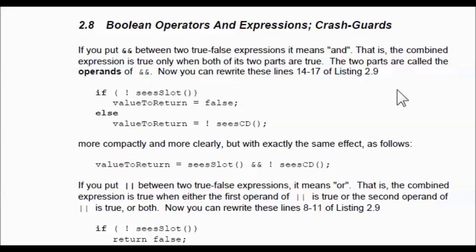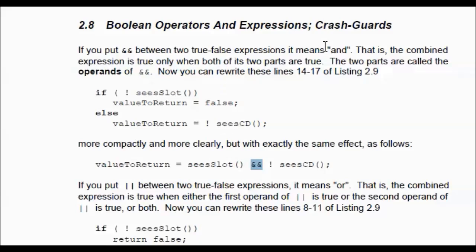Here we're going to see that if you have two conditions — CsSlot and doesn't see CD — with the AND operator, you have to have both conditions be true for this to work. A crash guard in this situation would be: if it doesn't see a slot, then it doesn't run the doesn't-see-CD check, because if there's no slot, of course there's no CD there. If the first statement returns false, it just moves on. That's the AND statement — that's considered a crash guard.